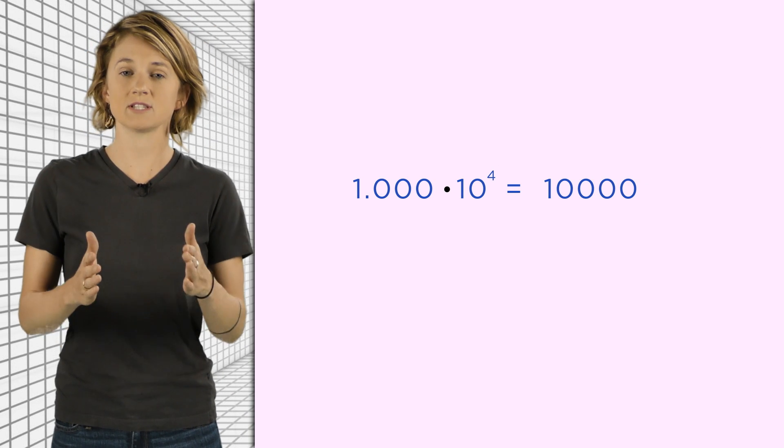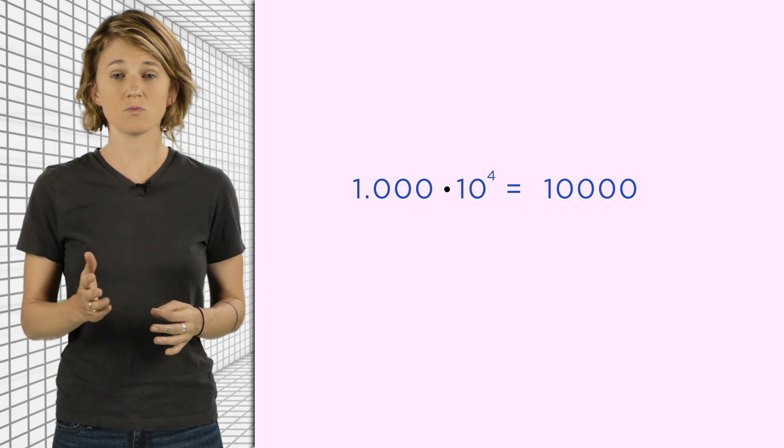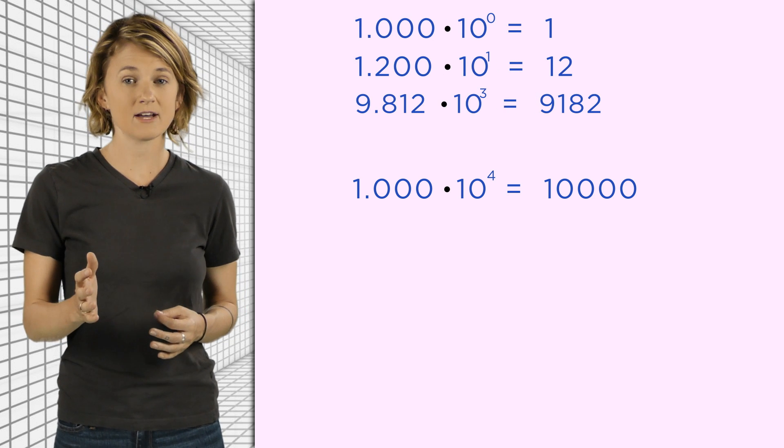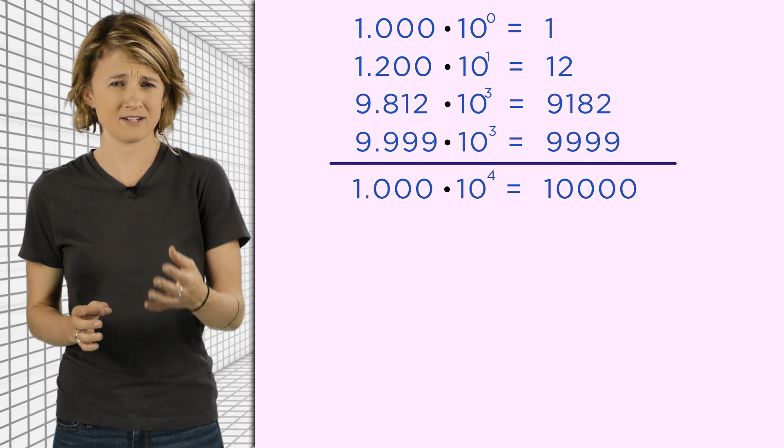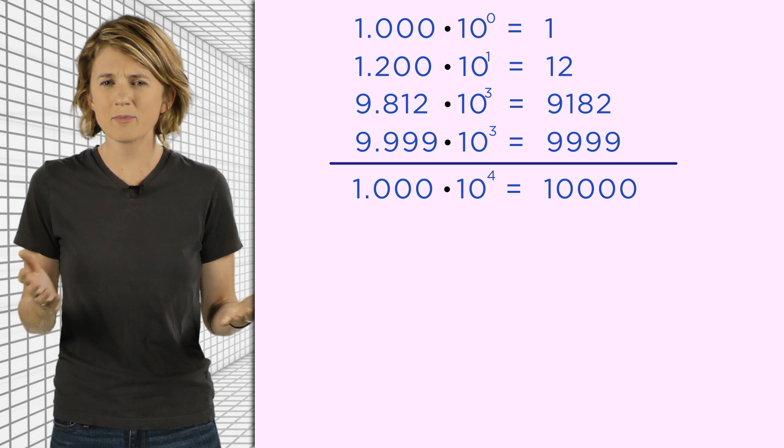With a restricted number of significant digits, we can write tiny numbers very precisely or big numbers with a lot less precision. For example, with four significant digits, we can write all the integers up to 10,000, which is 10 to the fourth. Here's 1, 12, 9,812, 9,999.